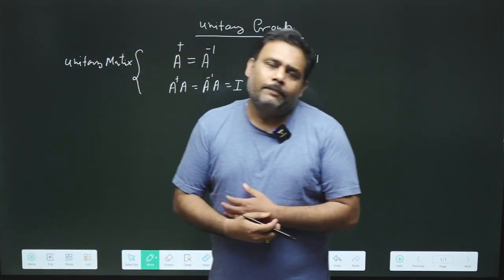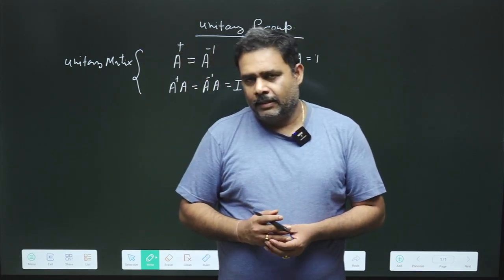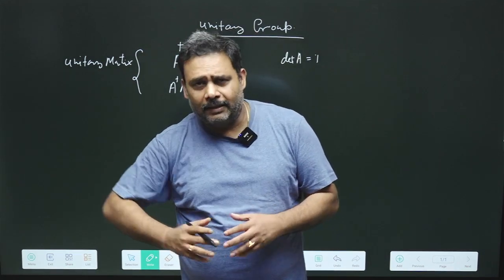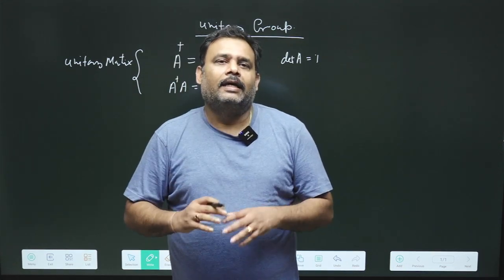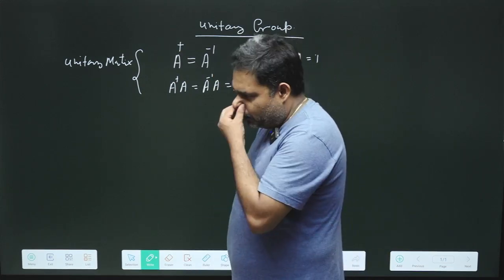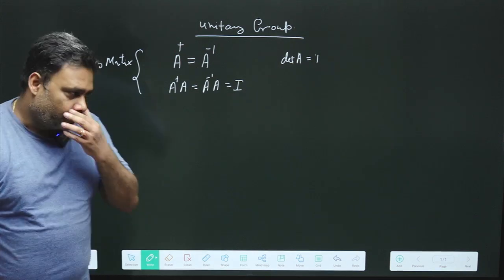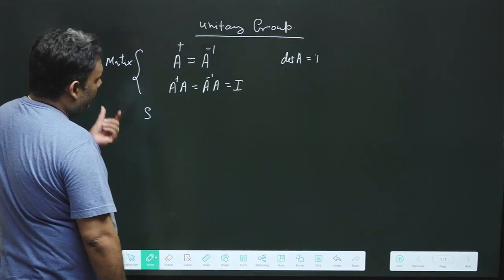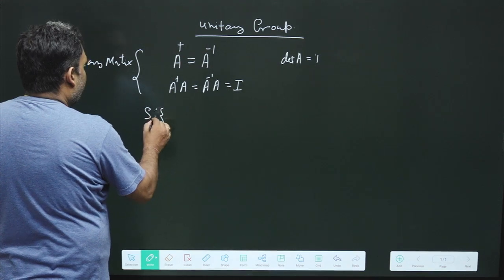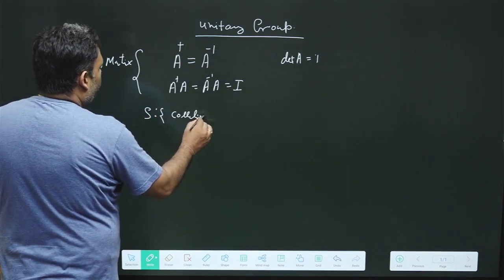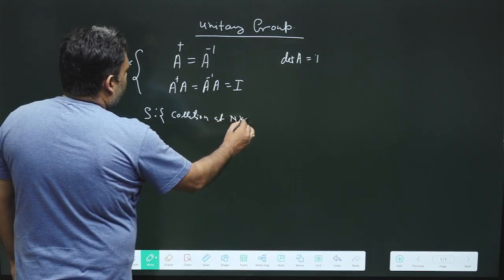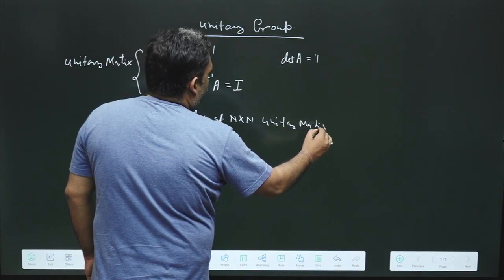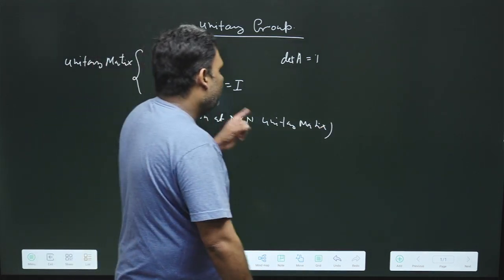What we have to do is prove that N×N unimodular unitary matrices, under matrix multiplication, form a group. Let us try to prove each point step by step. Suppose we have a collection S of N×N unitary matrices, and we have to prove that they form a group.